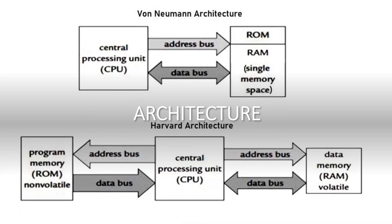First, to see about von Neumann architecture — here you can see a central processing unit with a memory unit, with address and data buses. This architecture is a type where the central processing unit, memory, and input-output peripheral devices are available and share a single bus for communication.